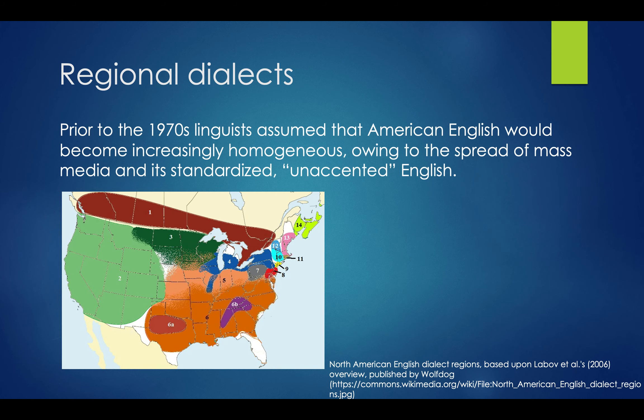With phonological differences, we also find regional dialects. Prior to the 1970s, linguists assumed that American English would become increasingly homogeneous — that because people were moving between areas and because of the spread of mass media, we would develop a standard unaccented English. But if you've traveled to other regions of the U.S., you recognize that is not the case. We still see distinct regional dialects.